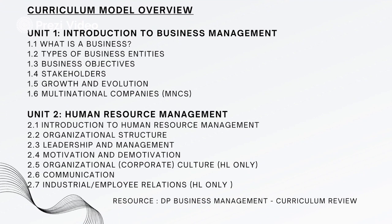In the curriculum model review: Unit One covers an introduction to Business Management — what is business, types of business entities, stakeholders, and so on. Unit Two covers Human Resource Management, including an introduction to HRM itself, organizational structure and its types, leadership and management, motivation and demotivation, communication, and so on.